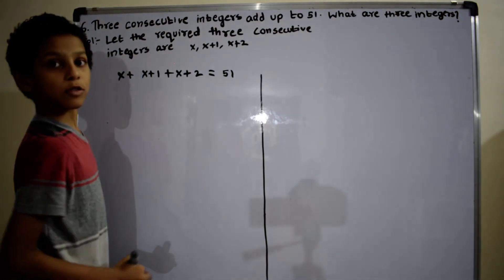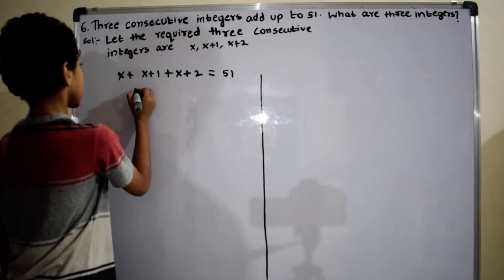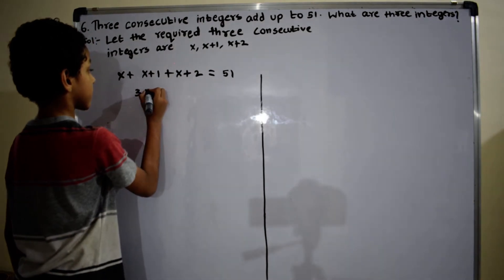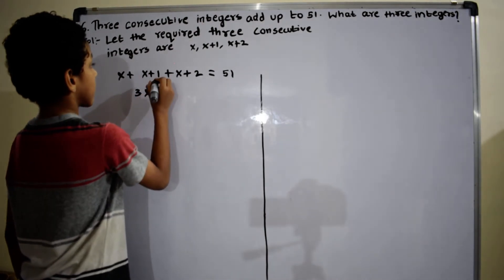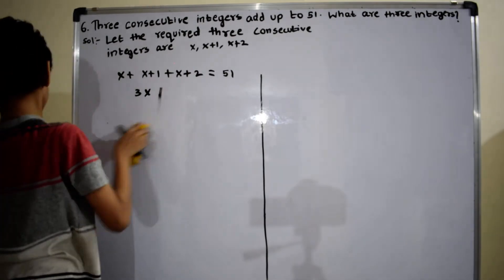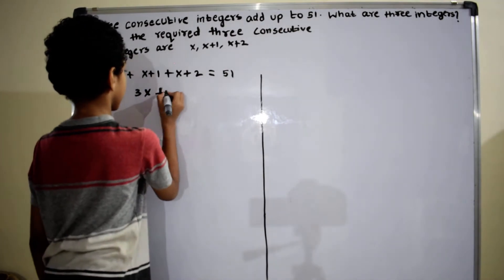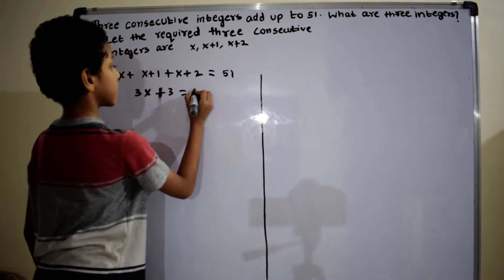x plus x equals 2x. 2x plus x equals 3x. 3x plus 1 plus 2 equals 3 equals 51, so 3x plus 3 equals 51.